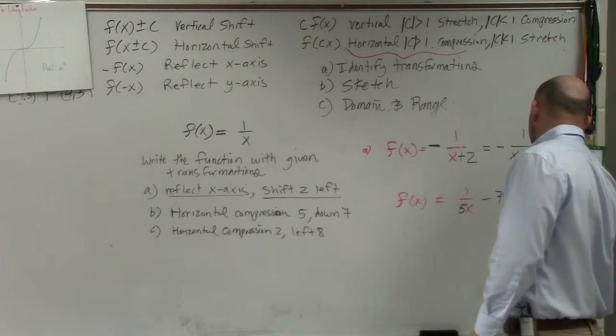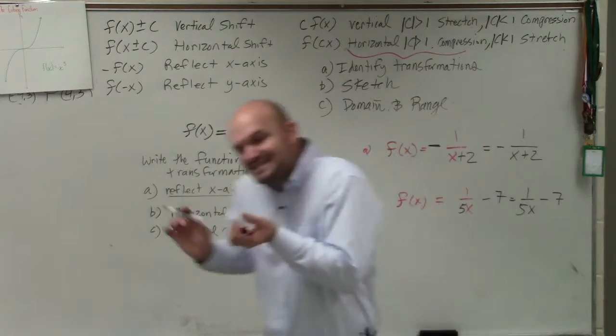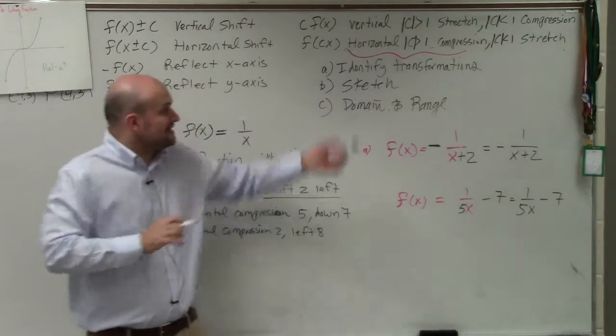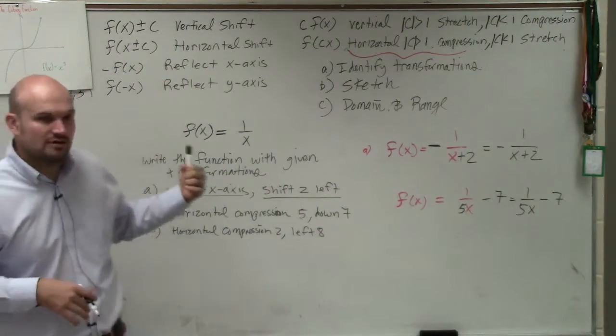Or I could rewrite 1 over 5x minus 7. Notice how the 5 is inside the function, because that was horizontal, which has to be inside. But the 7 is outside the function, because it's a vertical down.